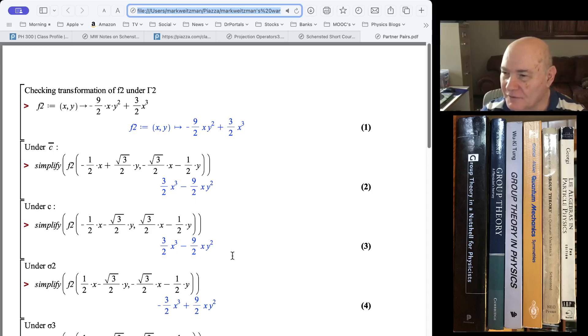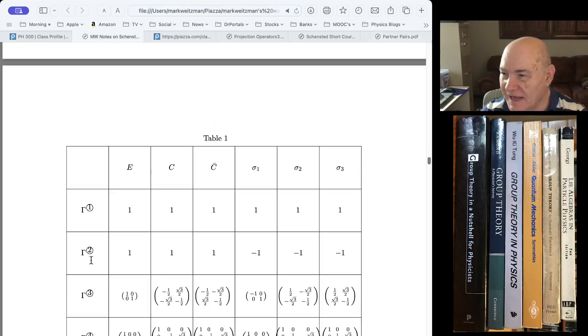Okay, so these were the calculations that I did where I'm saying, like, let's check this function that it transforms right under gamma two. And you can see, like, I took under C bar, I took F two of the transform coordinates.